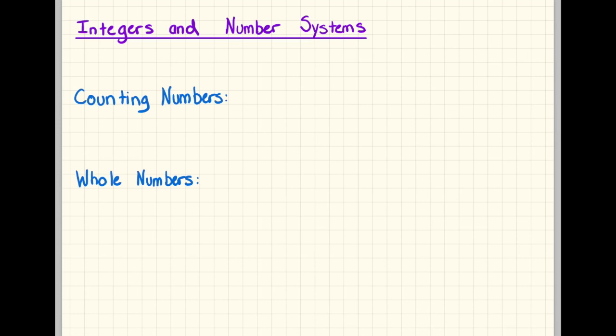Before we do integers, I wanted to talk to you first about just typical systems of numbers. Numbers can be categorized in more than one system, and we're going to start first with the basics. The basic number systems that we can classify them are the counting numbers and the whole numbers.